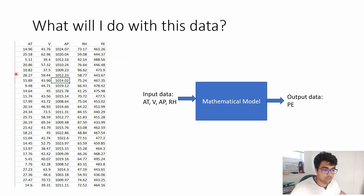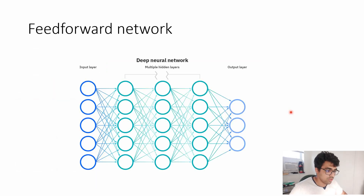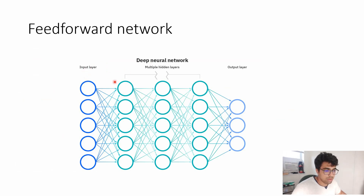What can I do with this data? We have ambient temperature, vacuum, ambient pressure, relative humidity, and the output which is power generated. I want to create a model such that given these four input values, I can predict the power output. For this we will use a feedforward network, one of the most basic neural networks, where information flows only in the forward direction.